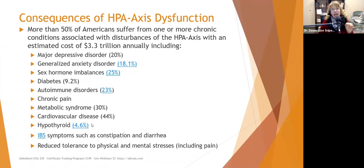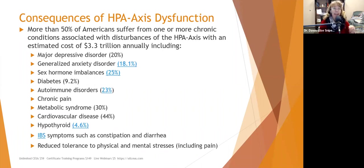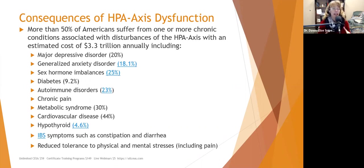More than 50% of Americans suffer from one or more chronic conditions associated with disturbance of the HPA axis, estimated to cost the United States $3.3 trillion a year. Many of these are preventable or at least modifiable if we can help people get their HPA axis into a state of regulation instead of dysregulation.